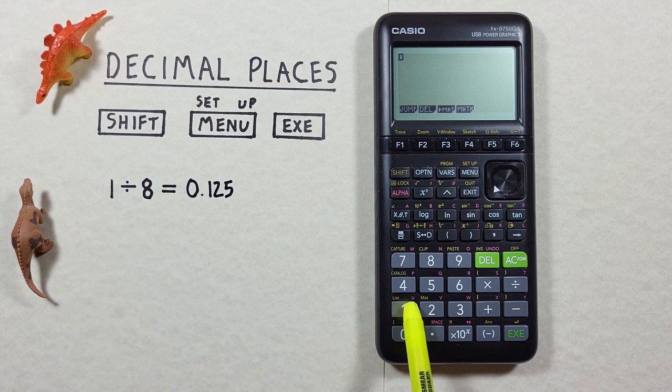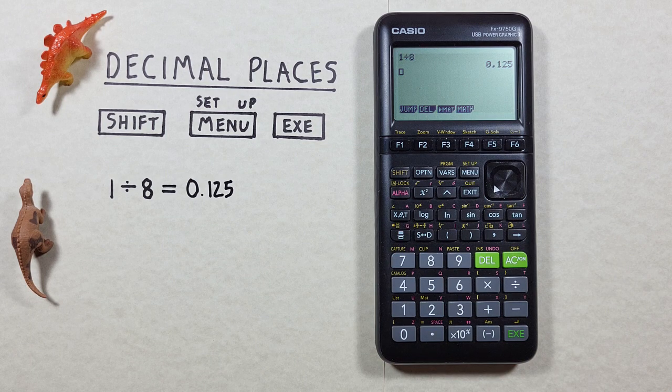Normally on this calculator when we do something like 1 divided by 8, it'll display all the decimals of the result. But what if we want to get that result rounded to say two decimal places?